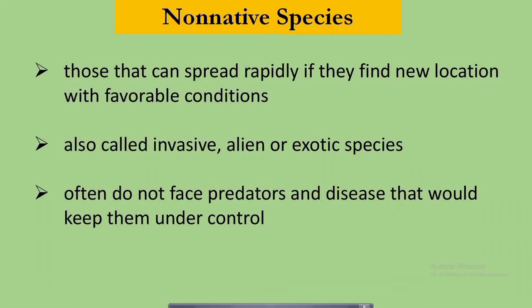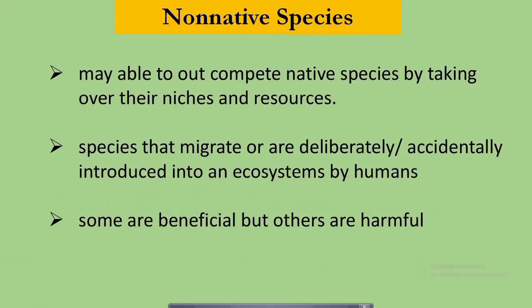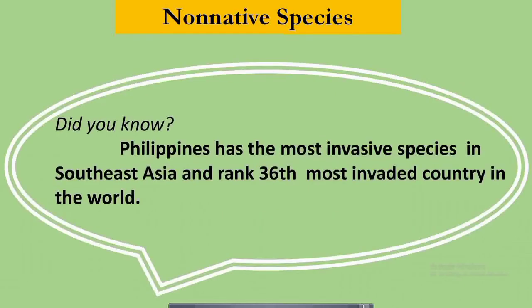Non-native species, on the other hand, are those that can spread rapidly if they find a new location with favorable conditions. They are also called invasive, alien, or exotic species, and often do not face predators and diseases that would keep them under control. They may be able to out-compete native species by taking over their niches and resources. Also, non-native species are species that migrate or are deliberately or accidentally introduced by humans. Some are beneficial, but others are harmful. Did you know that the Philippines has the most invasive species in Southeast Asia and is ranked 36th most invaded country in the world?